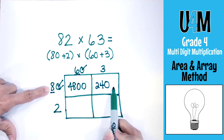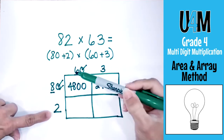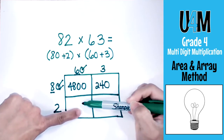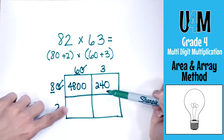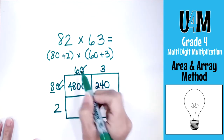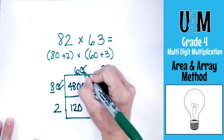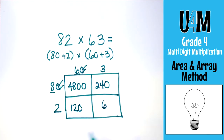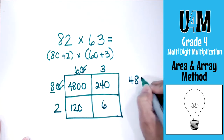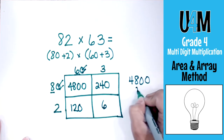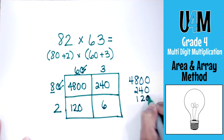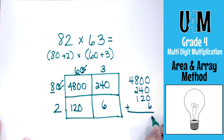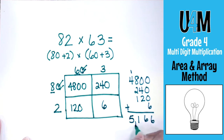Now we've finished the first row and we're shifting down to the second row. 60 times 2 — 2 times 6 is 12, add one zero, giving 120. And 3 times 2 is 6. Now that we have all the products we're going to add them together. It's very important to line up all those place values, otherwise your answer will be incorrect. Adding 4,800 + 240 + 120 + 6, our product is 5,166.